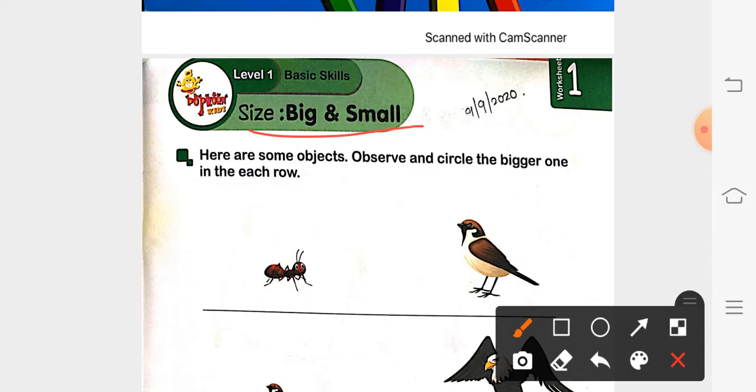Here are some objects. Observe and circle the bigger one in each row. Yarni ki yahan pe objects diya hua hai aur hume usse joh bada wala object hai usse hume circle karna hai. Okay?